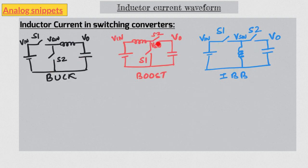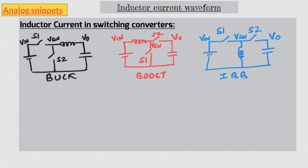Here we have buck, boost, and inverting buck-boost topologies. Input is on the left and output is on the right. The switch that is on during the magnetizing phase is S1, and S2 is on during the demagnetizing phase. One end of the inductor is permanently connected to V-out in the case of buck, V-in in the case of boost, and neither in the case of IBB. This fact will have some important implications as we will discuss later.